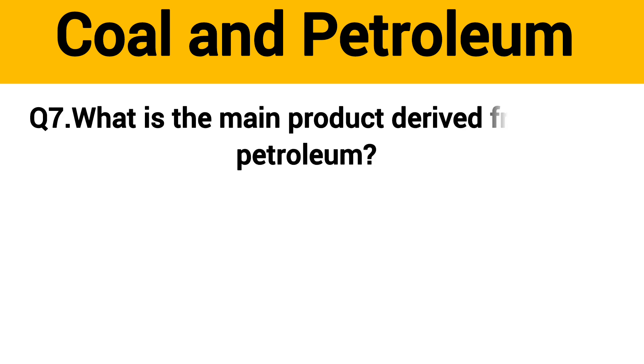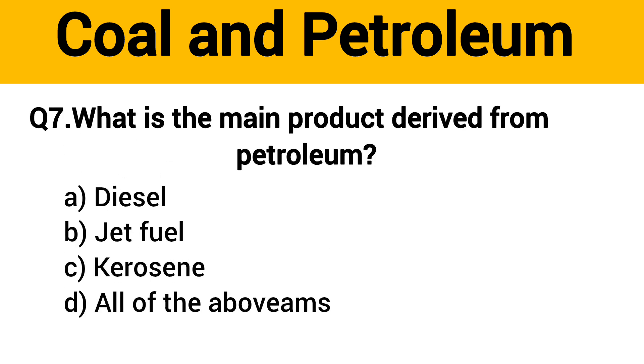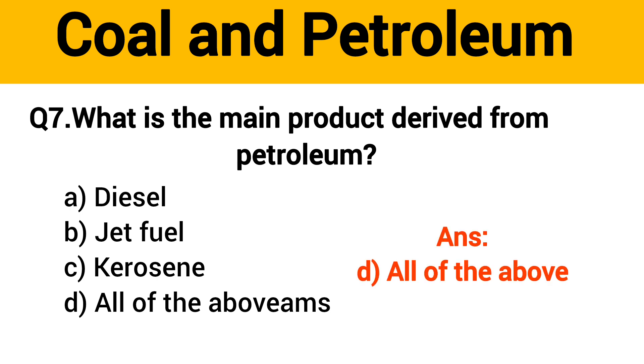Question No. 7. What is the main product derived from Petroleum? The right answer, Option D: All of the above.